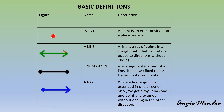A line is a set of points in a straight path that extends in opposite directions without ending. Now on this line we can have a set of points — there can be many points on this line. We can see that this line is extending in both directions, and hence a line has no fixed length and cannot be measured.